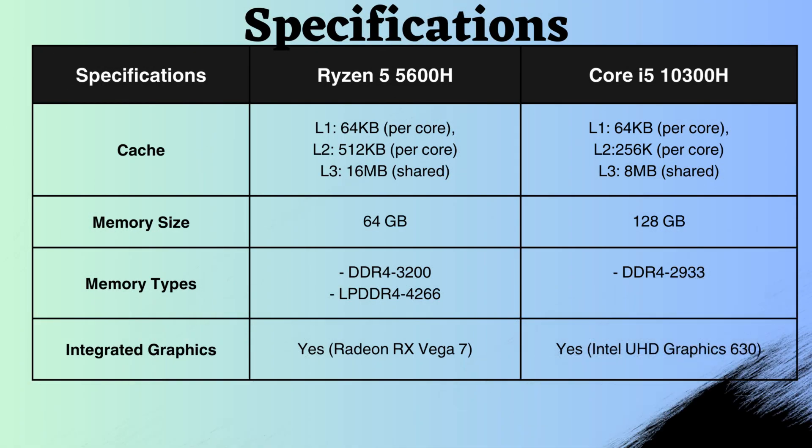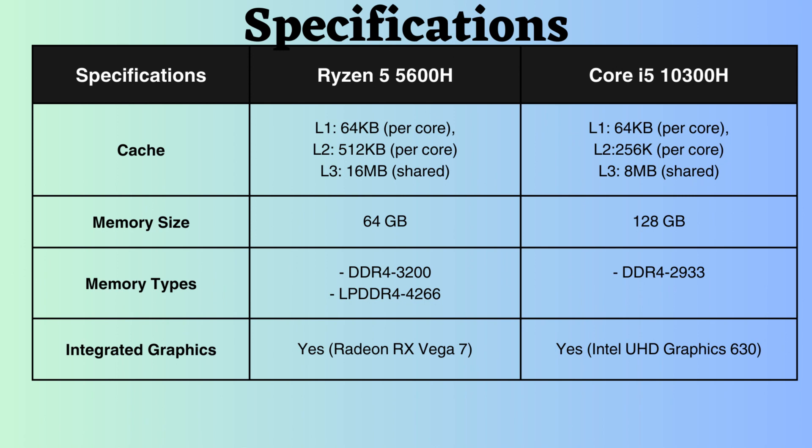The L1 cache size for both processors is the same, but the L2 and L3 cache sizes of the Ryzen 5600H are 512 kilobytes and 16 megabytes, respectively, which are greater than those of the Intel 10300H. Consequently, the Ryzen 5600H generally leads to improved system performance by enabling the processor to quickly store and retrieve more data and instructions, reducing the need to fetch data from slower main memory.